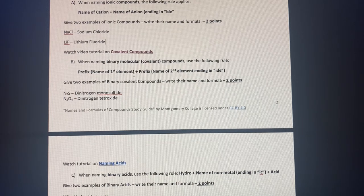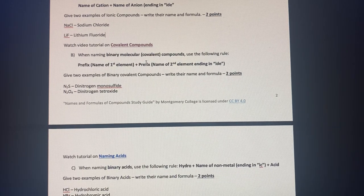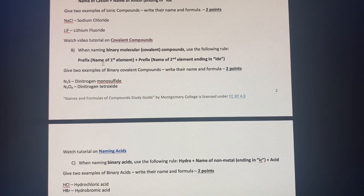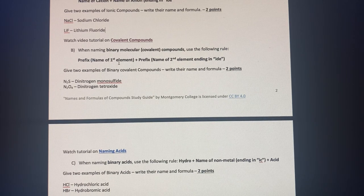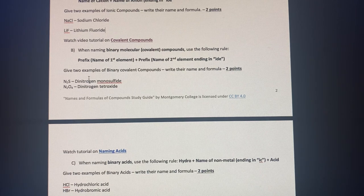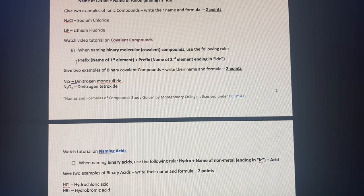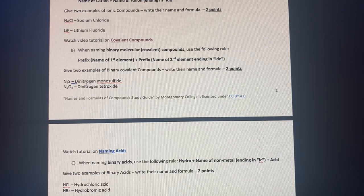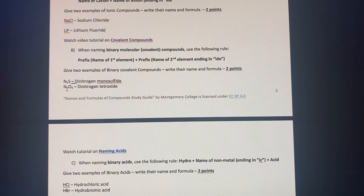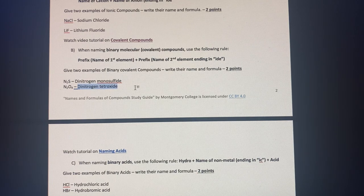We then look at covalent compounds, specifically binary molecular compounds. And we have the prefix and then the name of the first element, followed by the prefix and the name of the second element ending in IDE. For the first example, we have nitrogen and sulfur. And with the given formula, we have dinitrogen monosulfide. The second example, we again have nitrogen, followed by oxygen this time. And thus, we get dinitrogen tetraoxide.